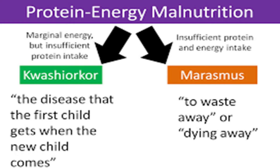Kwashiorkor, also called protein malnutrition, is a condition caused by severe protein deficiency. Kwashiorkor is most often encountered in developing countries where the diet is high in starch and low in protein. It is common in young children weaned to a diet consisting chiefly of cereals, grains, sweet potatoes, or similar starchy foods. The condition was first described in 1932. The term kwashiorkor means 'deposed child'—deposed from the mother's breast by a newborn sibling in one African dialect, and 'red boy' in another, referring to the reddish-orange discoloration of the hair characteristic of the disease.